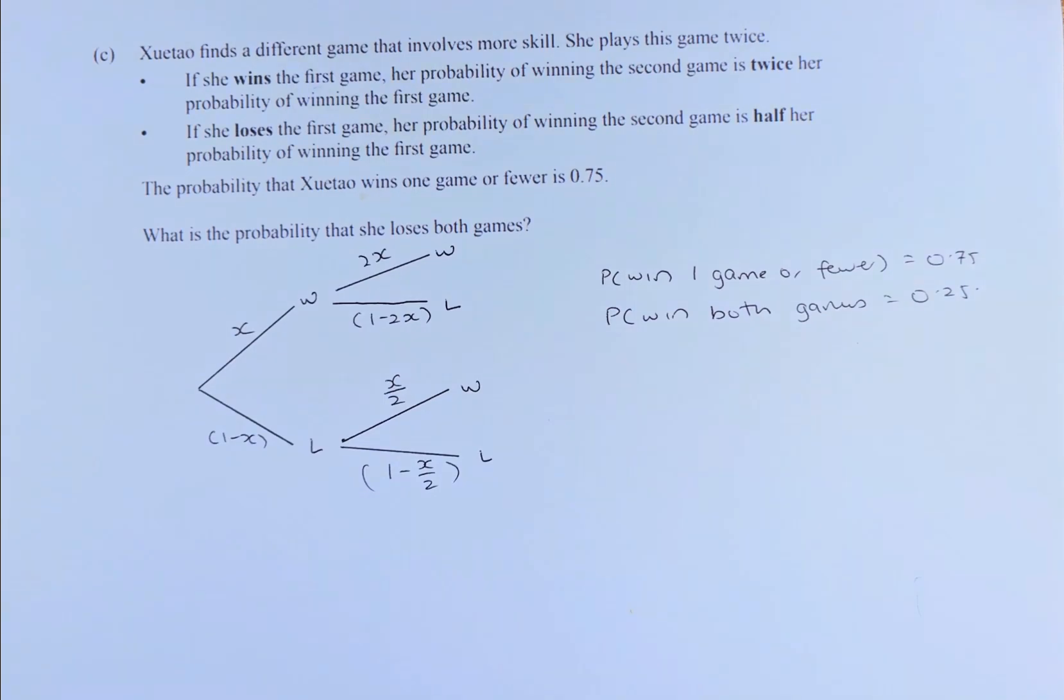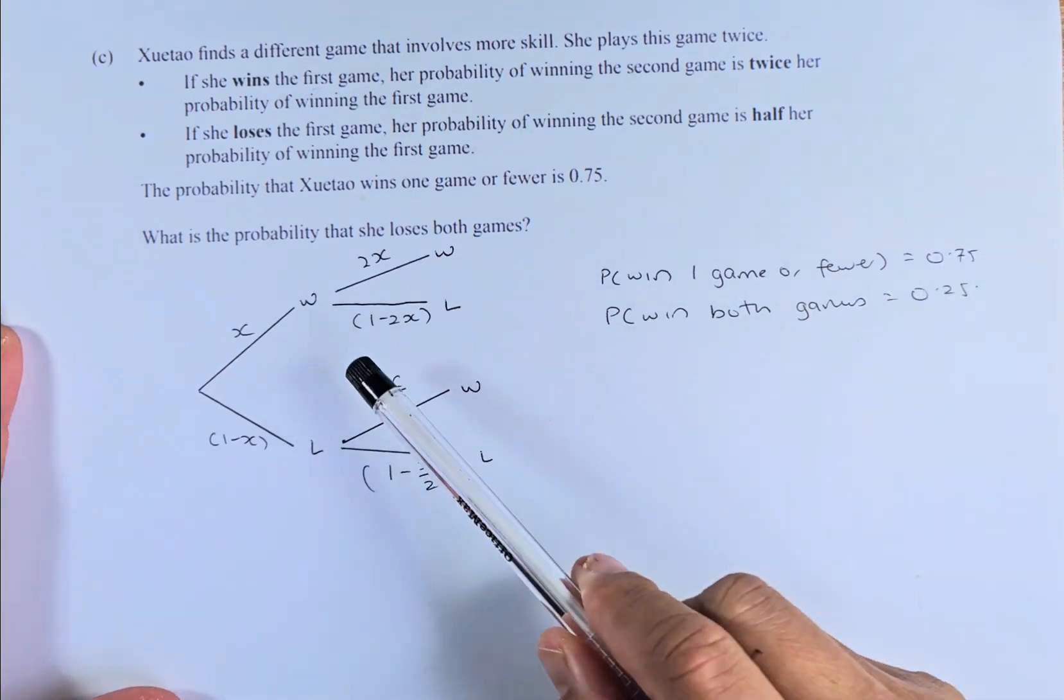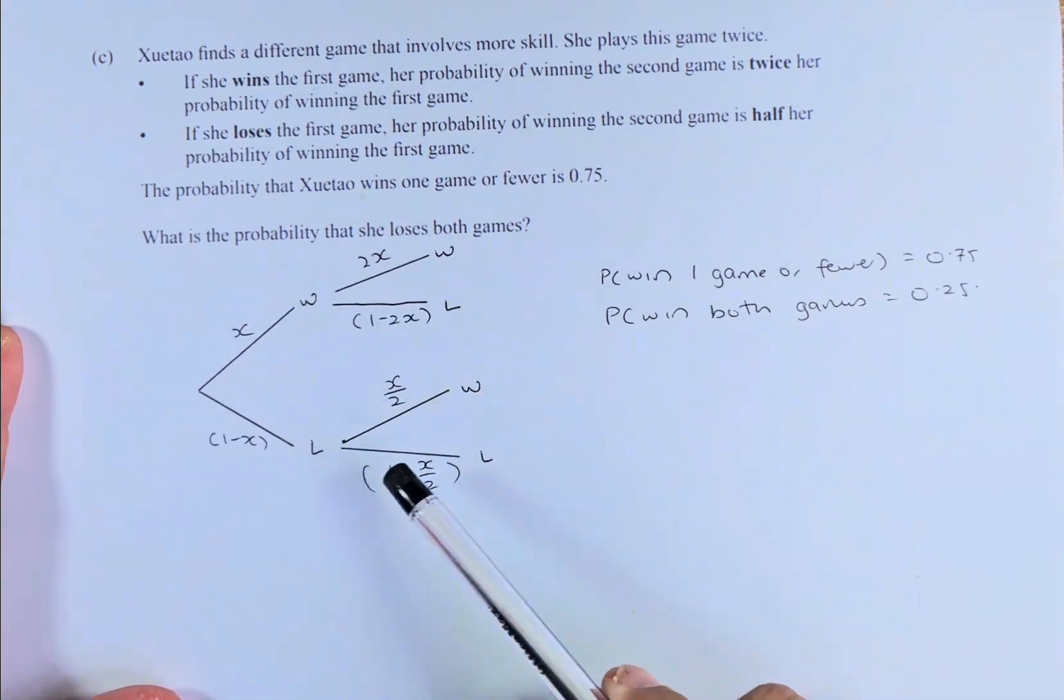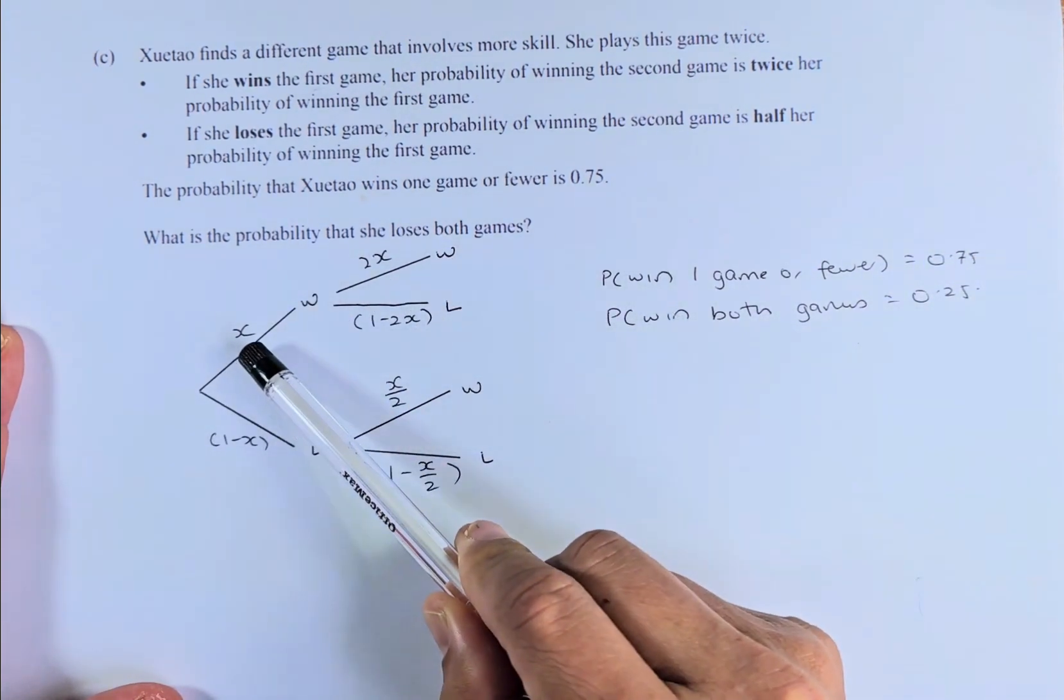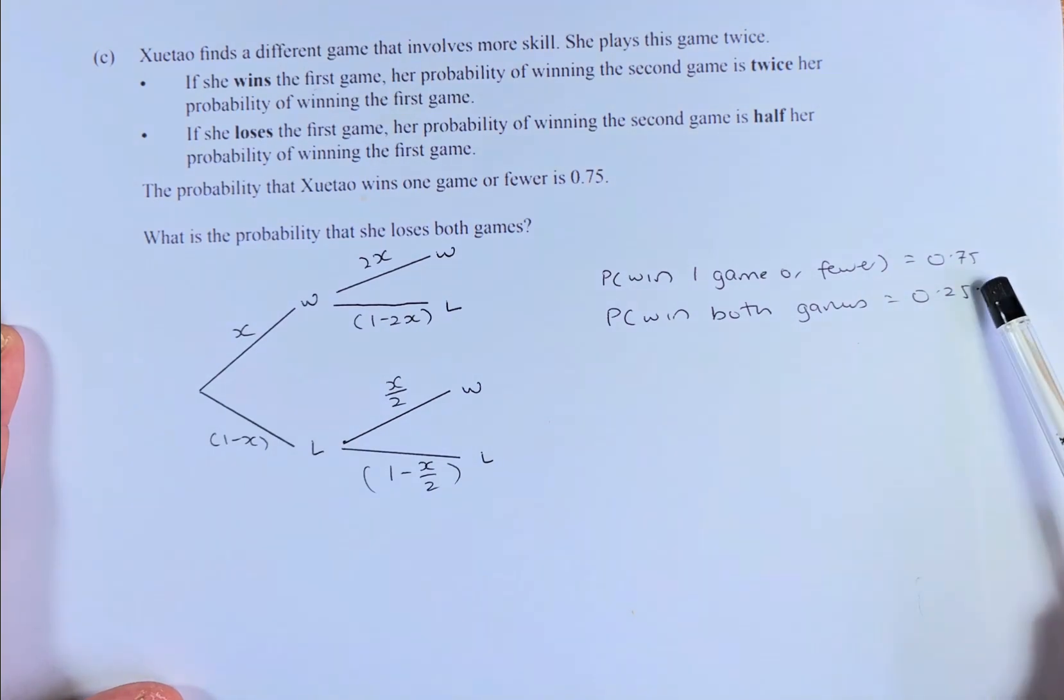Now we need to solve this problem. The probability that Xu Tao wins one game or fewer is 0.75. So win-lose, lose-win, and lose-lose—these are all win one game or fewer, which equals 0.75. The probability of winning both games is going to be 1 minus 0.75, which is 0.25.